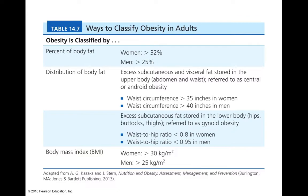The distribution of body fat can be either excess subcutaneous or visceral fat stored in the upper body — called android obesity — or excess subcutaneous fat stored in the lower body such as hips, buttocks, and thighs — referred to as gynoid obesity. For the apple or android obesity, we measure waist circumference; for the pear or gynoid, we measure the waist-to-hip ratio. Body mass index is also used to classify obesity — a BMI over 30 kg/m² for women or 25 kg/m² for men is considered obese.